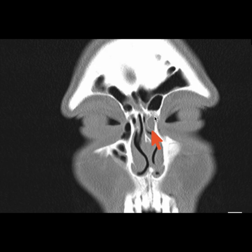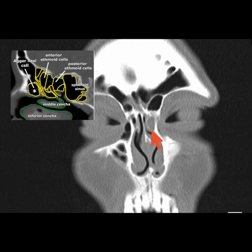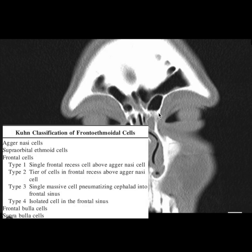This is an agger nasi cell. What is an agger nasi cell? It is the anterior-most ethmoidal cell — the ethmoidal cell that started walking, went all the way in front, and decided to sit there. This is the area of the frontal beak, and this marks the demarcation of type 3 and type 2 frontal cells.